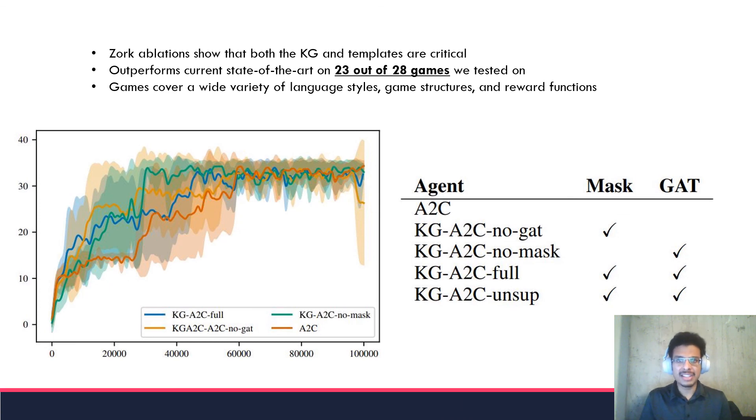There's a lot of moving parts here, so we tried some ablations to see what parts actually helped. This included removing uses of the knowledge graph in terms of the mask and the graph attention embeddings. The results show that having both the knowledge graph and the templates together in place lets the agent learn significantly faster and demonstrates its overall usefulness.